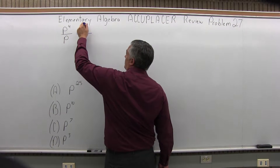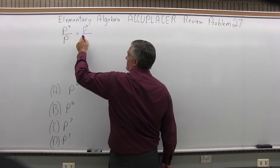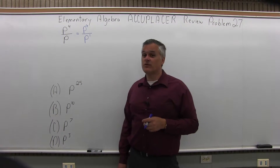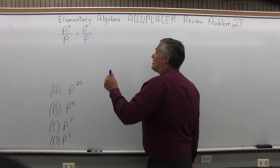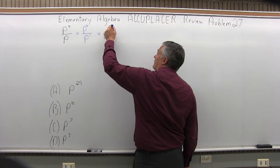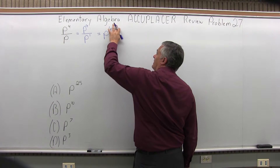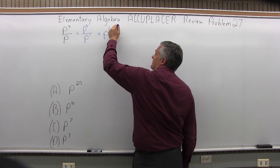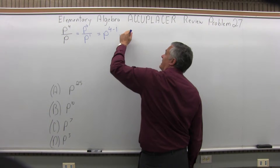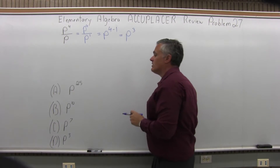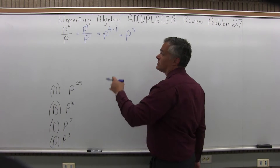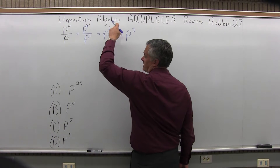Now the p to the fourth on top clearly has an exponent. The p in the denominator, the exponent is not written, but it's understood to be a first power. So now I can go ahead and subtract, and I will have my variable p to the four minus one — the top exponent minus the bottom exponent — and that gives me p to the third, which is one of the options. That's the rule: if you have the same base, you subtract your exponents.